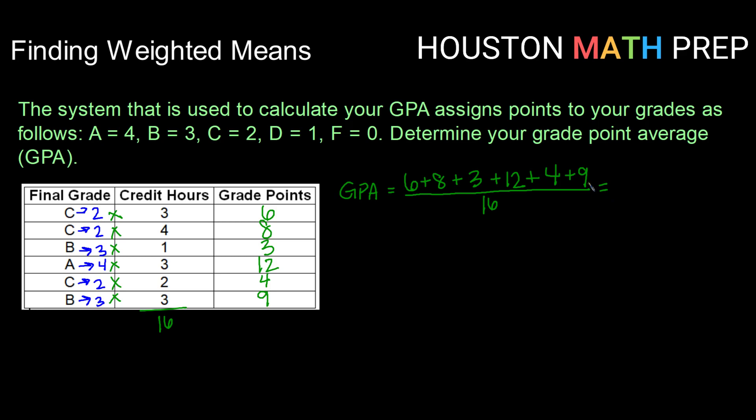So if I sum up the top values, I get 42 divided by 16 gives me a GPA of 2.63. So with grades shown, we would get a weighted average or a GPA of 2.63.